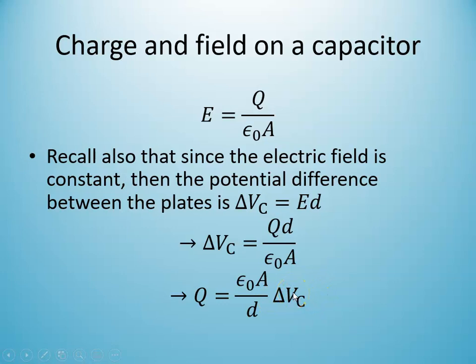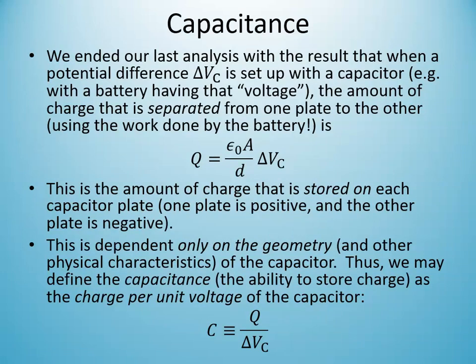Since capacitance is defined as charge per unit electric potential difference, we extract an expression for the capacitance of a parallel plate capacitor: C = ε₀A/d, where A is the area of each plate and d is the separation distance. In general, capacitance is always charge per unit voltage — that must be memorized. Therefore Q = CΔV.